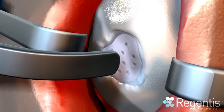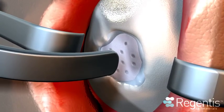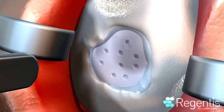The Gelrin-C implant conforms to fit tightly with the surrounding tissue and underlying bone with no gaps.